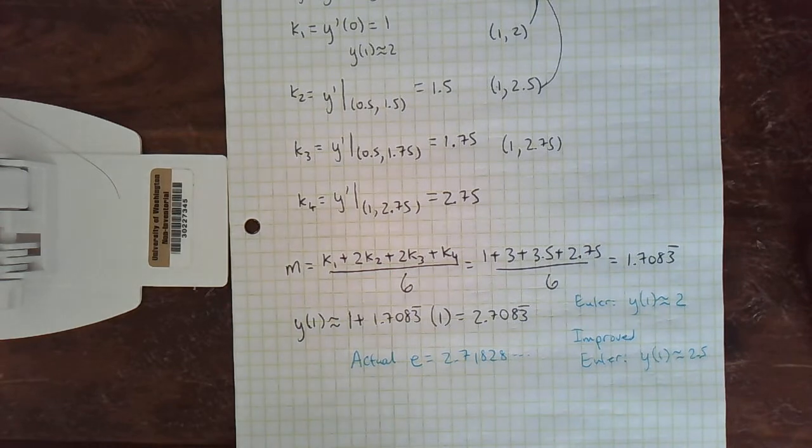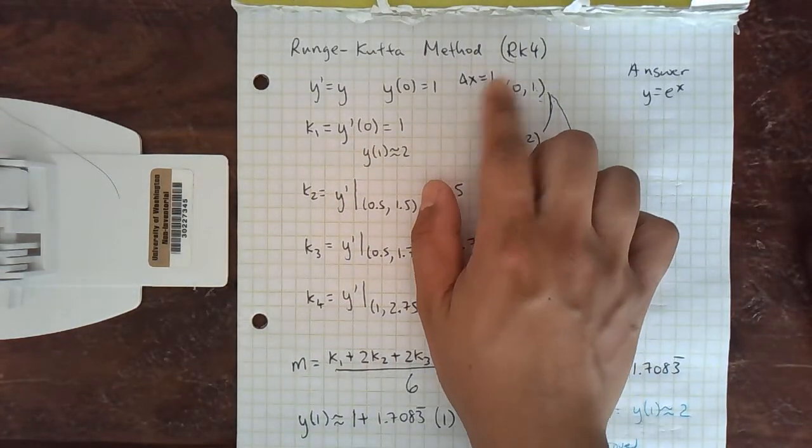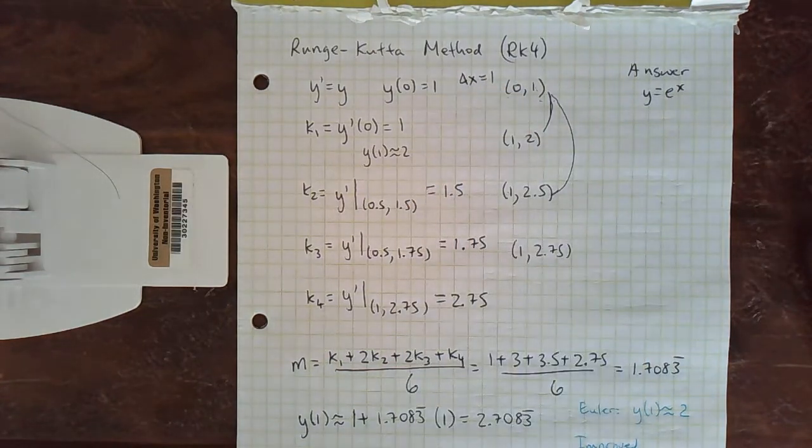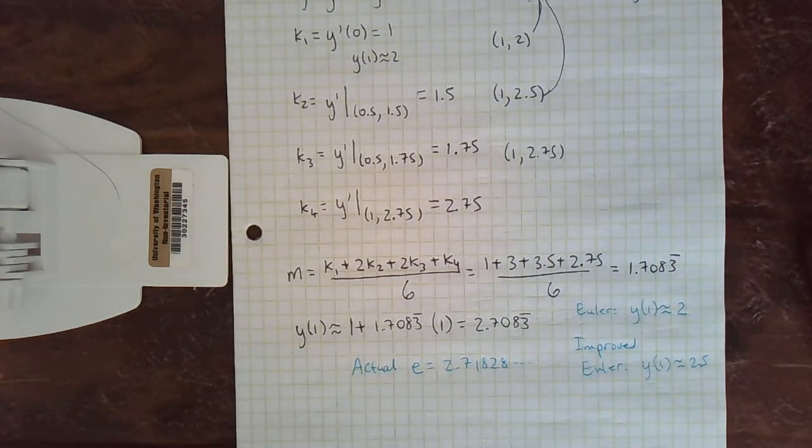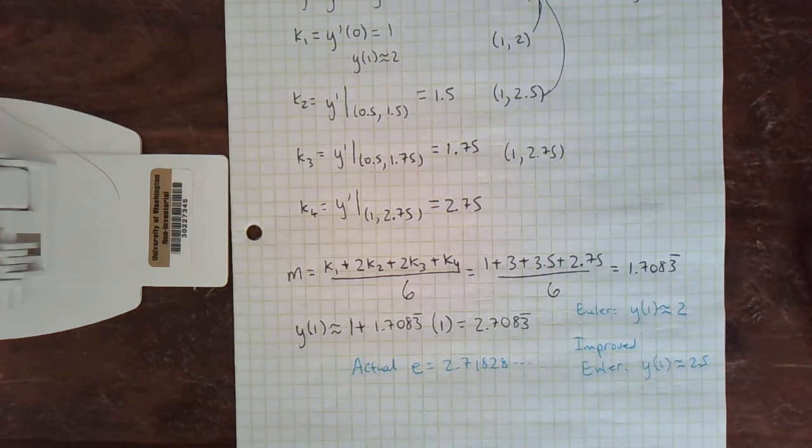It still doesn't do very well if you keep going. Mainly because the step size is so big. If we decrease the step size, then we do a lot better on further iterations. But at least the first step is you can see much, much better than either of the Euler methods.